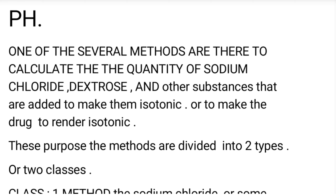There are several methods to calculate the quantity of sodium chloride, dextrose, and other substances that are added to make a solution isotonic — that is, to render the drug isotonic. Tonicity maintains a certain amount of fluids so that it can be adjusted. We use not only sodium chloride, but also dextrose, boric acid, or other described substances.